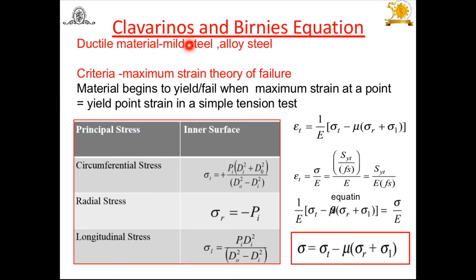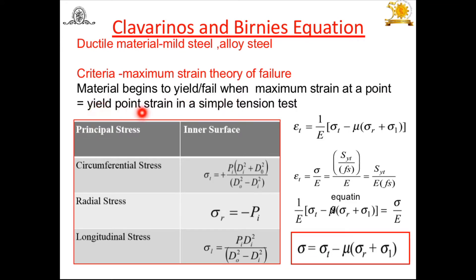For ductile material, we are going to use Clavarino's and Birnie's equations to find out the wall thickness. Consider first Clavarino's equation. For a thick cylinder made of ductile material, the maximum strain theory of failure is applicable. According to this theory, a material begins to yield or fail when the maximum strain at a point equals the yield point strain in a simple tension test.